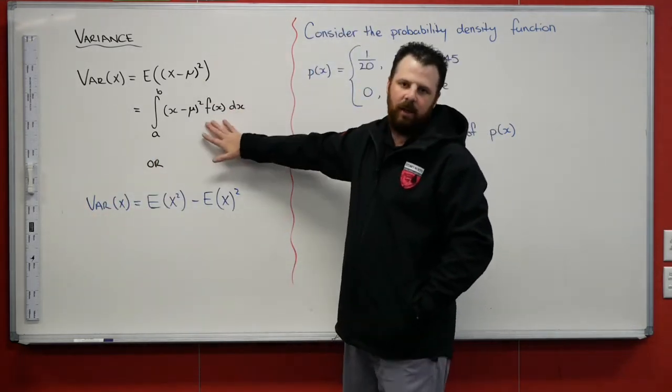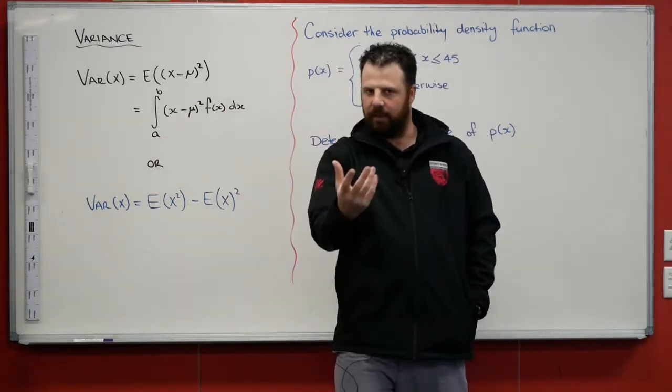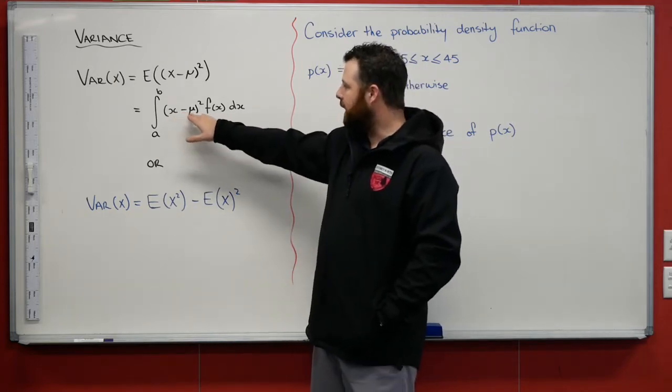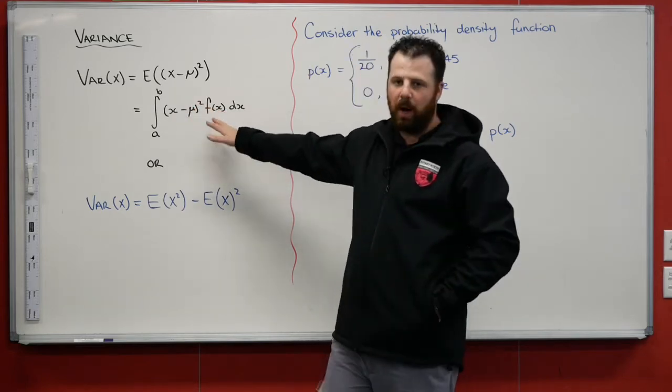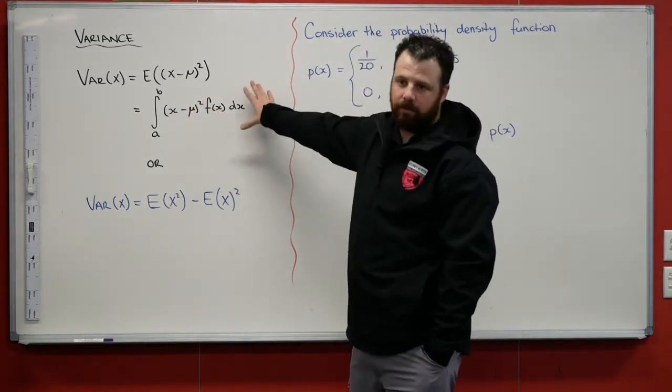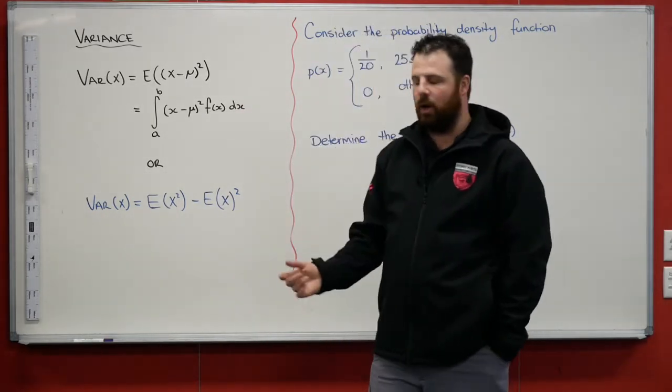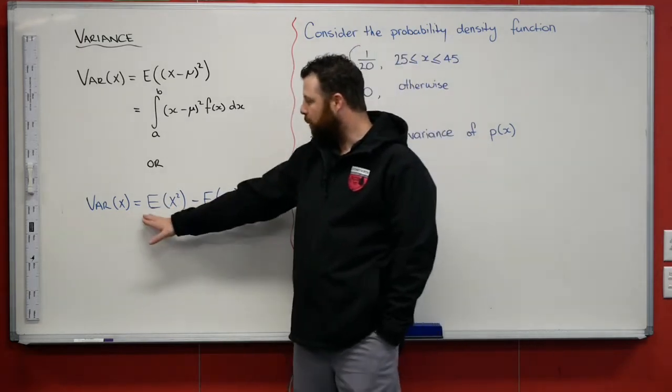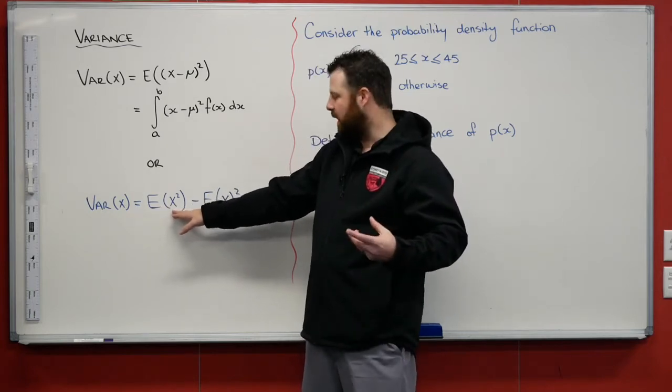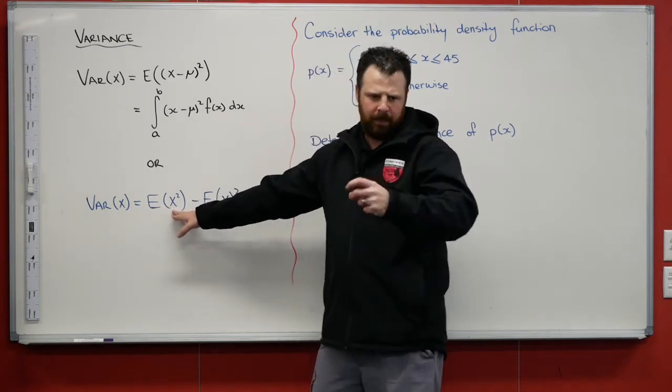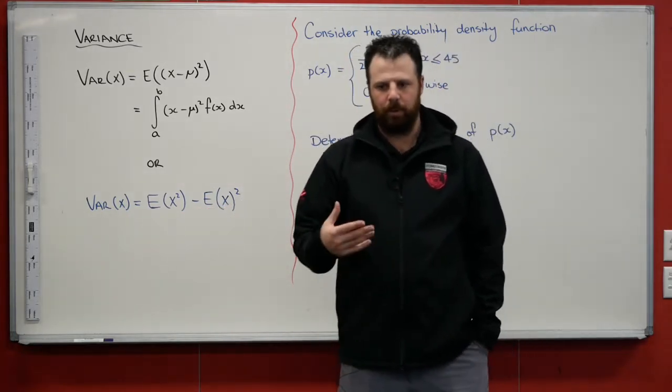Very similar with a continuous random variable, summing together all those infinite possibilities of the score minus the population mean squared multiplied by its probability. That's how we find it using integration. The other way we could do it, and it's a lot more effective, is we find the variance by getting the expected value, substitute x squared in at that first step for finding the expected value minus the expected value squared.